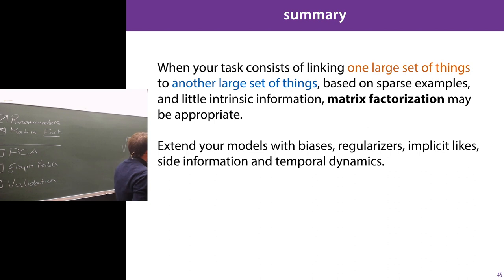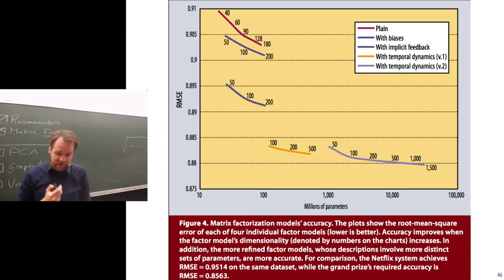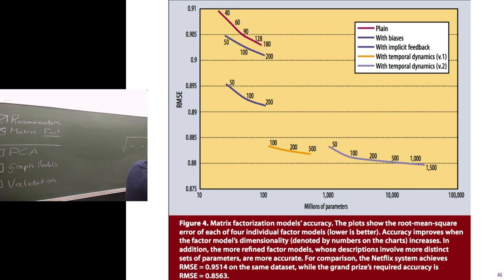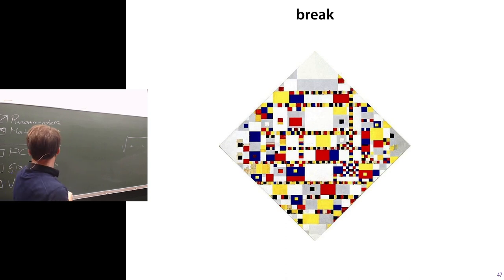That's recommender systems and matrix factorization. A short summary: when your task consists of one large set of things and another large set of things, and you have a relation between these two, you can consider matrix factorization to model that relation. You have biases, regularizers, implicit likes, side information, and temporal dynamics to take into account. The results from the paper show that plain matrix factorization gives a certain squared error, adding biases drops it a little, implicit feedback drops it a lot, and temporal dynamics really help you get into the prize-winning area to beat Netflix's threshold. Let's take a 15 minute break and then continue with principal component analysis.